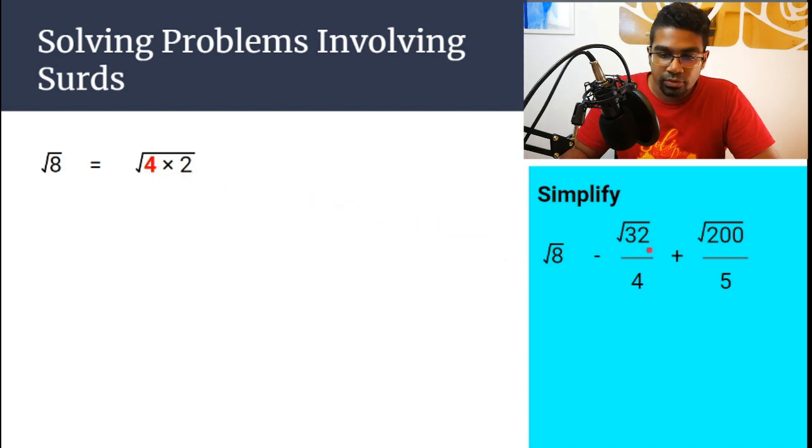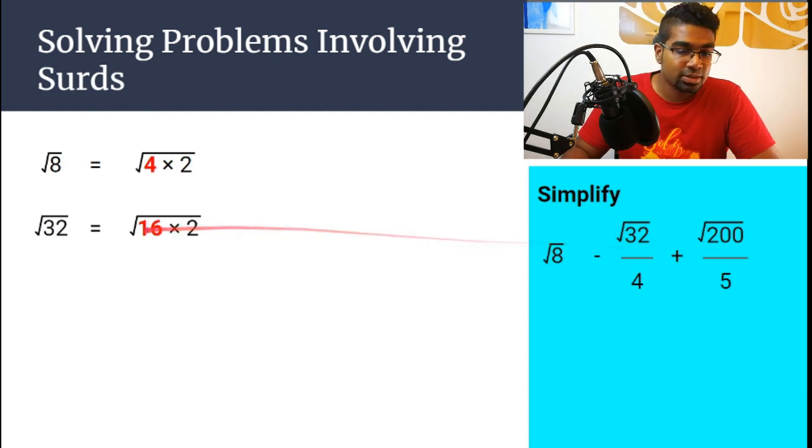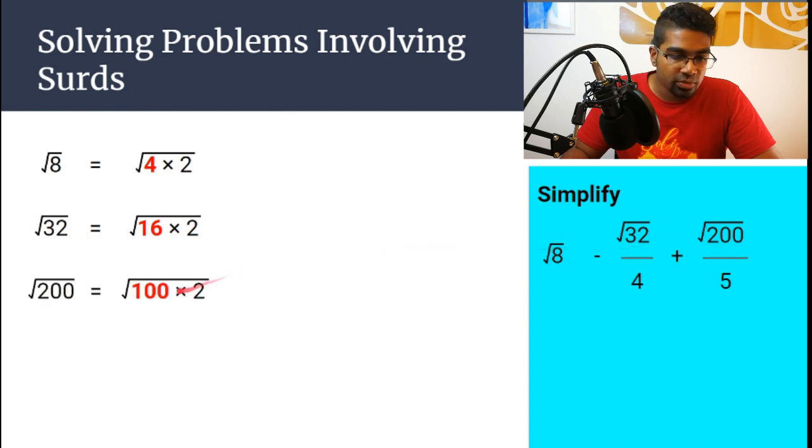Then let's look at the other one, square root 32. So square root of 32, number 32, we can factorize 16. So we can write it as 16 times 2. And then for 200, 100 is a perfect square, so we can write it as square root of 100 times 2.